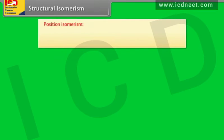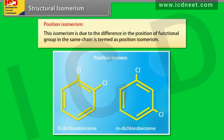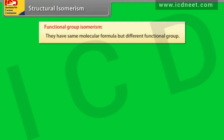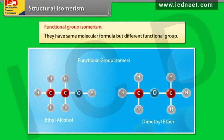Position isomerism: this isomerism is due to the difference in the position of functional group in the same chain, and is termed as position isomerism. Functional group isomerism: compounds have same molecular formula but different functional groups.